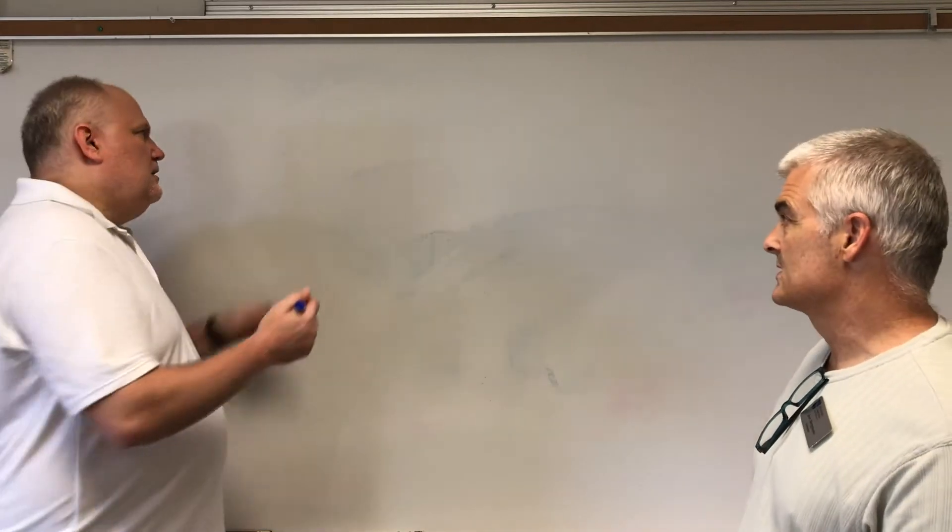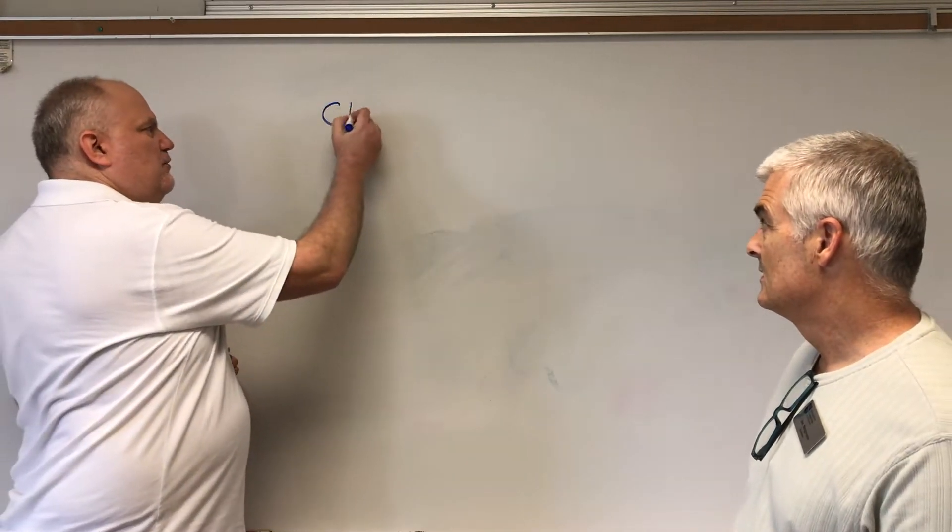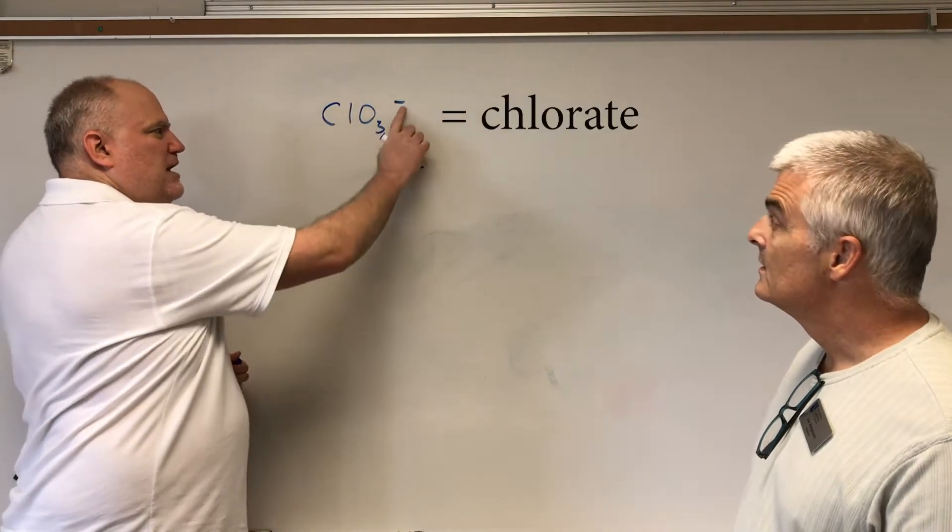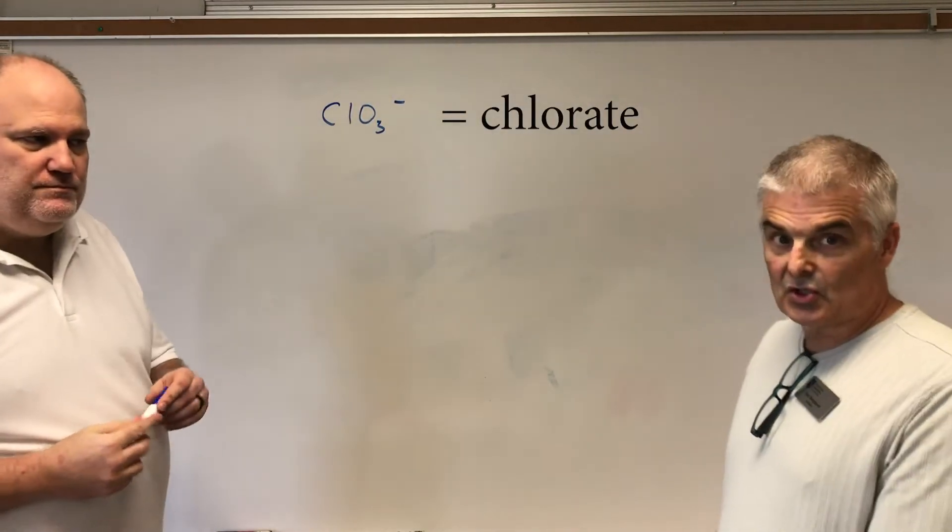So, what's an example of one polyatomic ion? This will be something called chlorate, ClO3 minus. This entire molecule has a charge of a minus one. Okay, so that's chlorate.